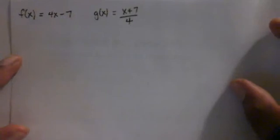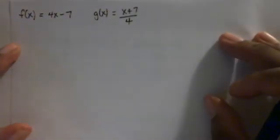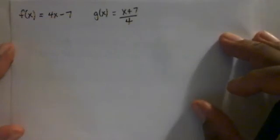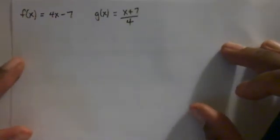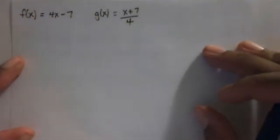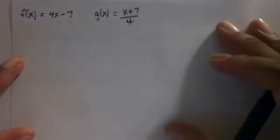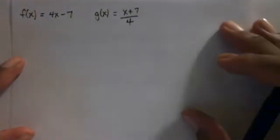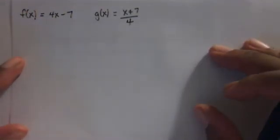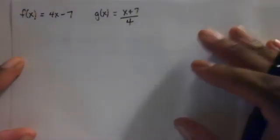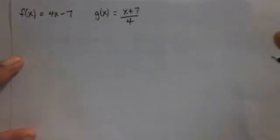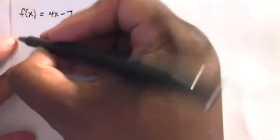By the definition, we're going to use the composition of f with g of x and the composition of g with f of x — they both must be equal to x. If they are, then we can say those two functions are inverses. If they're not the same, then they're not inverses.